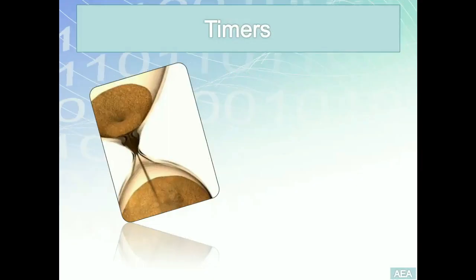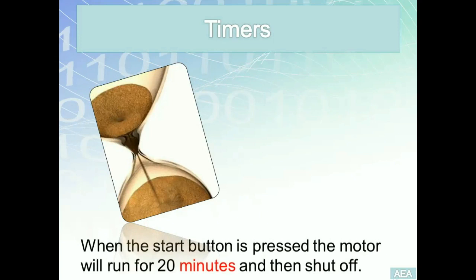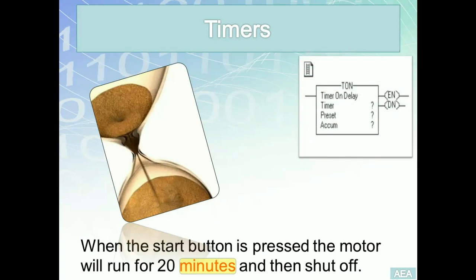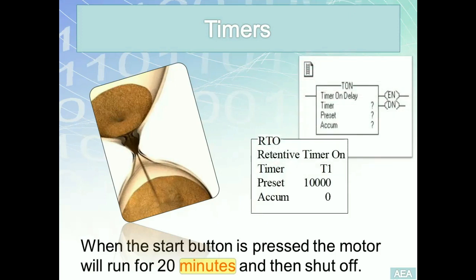Timers are internal instructions among many other instructions within the Allen Bradley Logix 5000 library. Anytime you come across a requirement like: when a start button is pressed, the motor will run for 20 minutes and then shut off — there is a timer value involved, whether in minutes, seconds, hours, or days. Any timer value means we need to grab one of these internal timer blocks, configure them, and we're good to go.